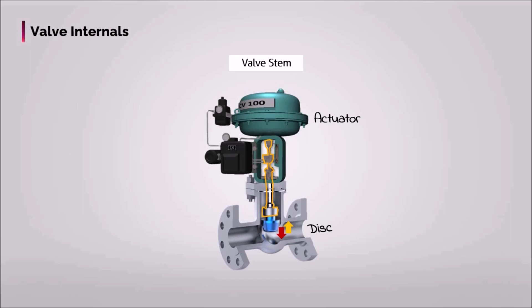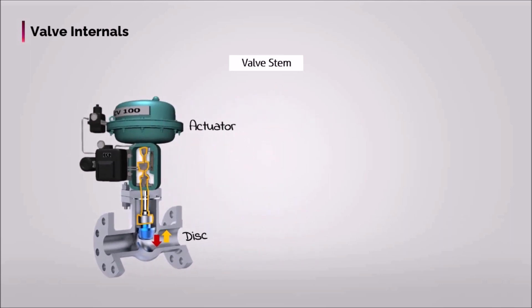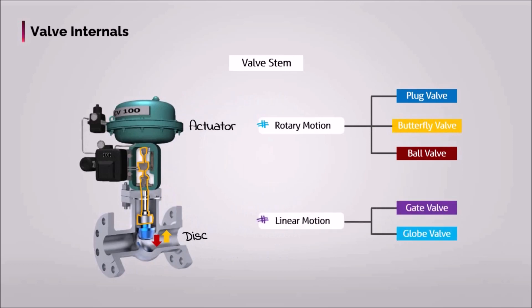In plug, butterfly and ball valves, the disc is rotated to open or close the valve. Meanwhile in gate or globe valves, linear motion of the disc is required to open or close it.